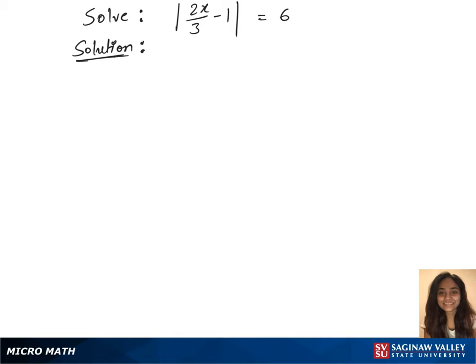To solve this absolute value equation, we see that this is equivalent to 2x over 3 minus 1 equals 6, or 2x over 3 minus 1 equals minus 6.